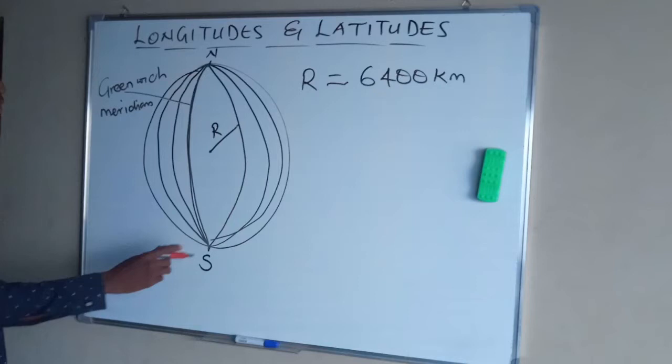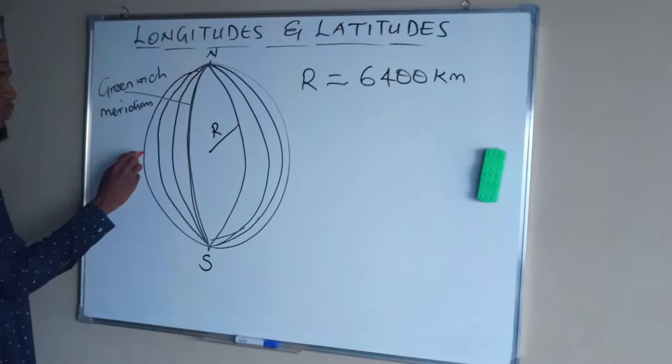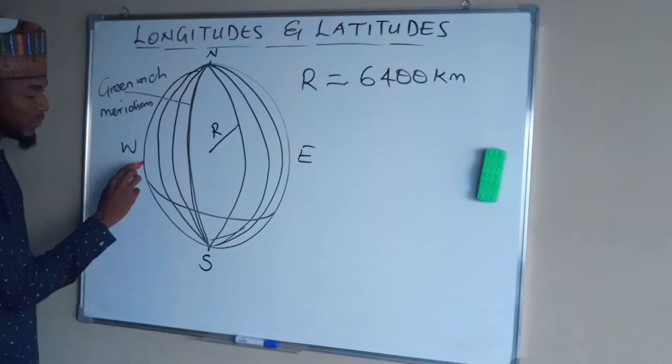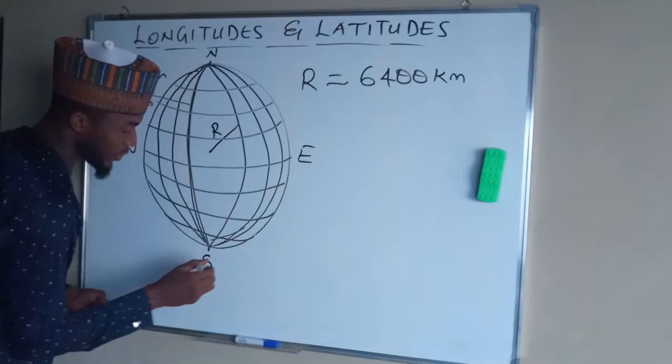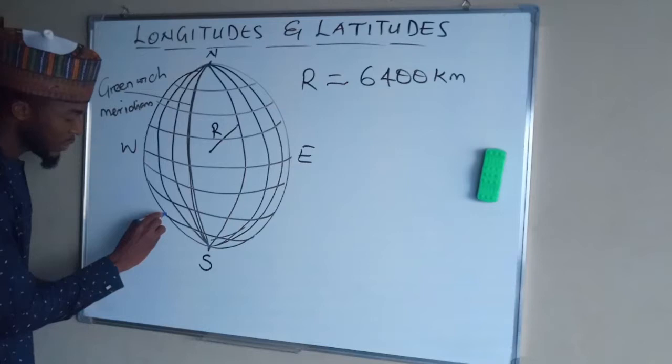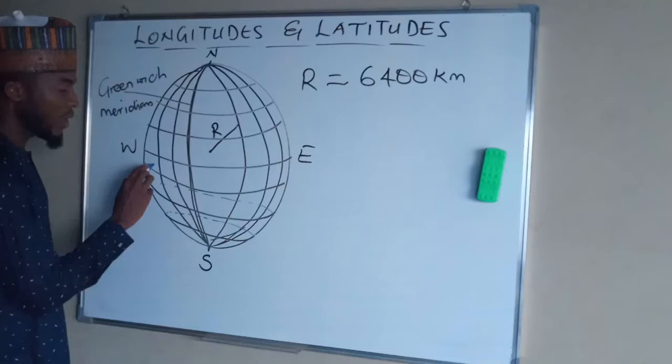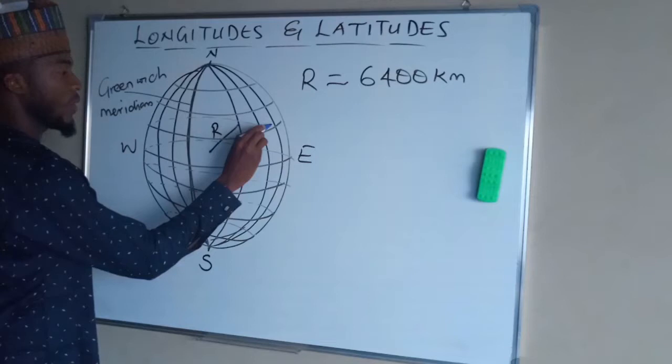Then latitudes. Latitudes are also imaginary lines passing through the Earth's surface from east to west. All these are latitudes — from west to east or from east to west, forming cycles. And these cycles are of different radius. All these cycles have different radii.